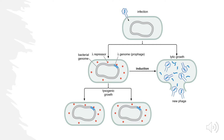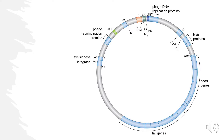Now let's jump into some new information. We're looking at a very general picture of a circular genome with all these different promoters and genes that we're going to express. This looks very complex right now, but hopefully by the end of this video a lot of these things will make sense.